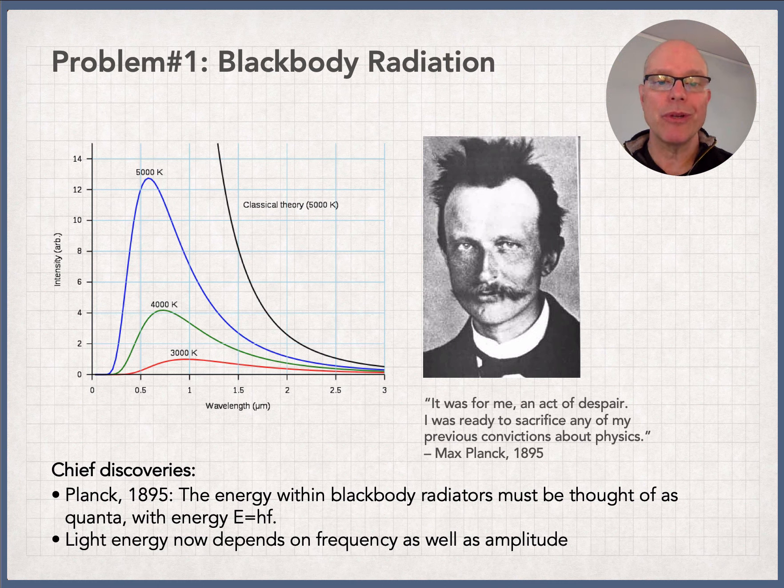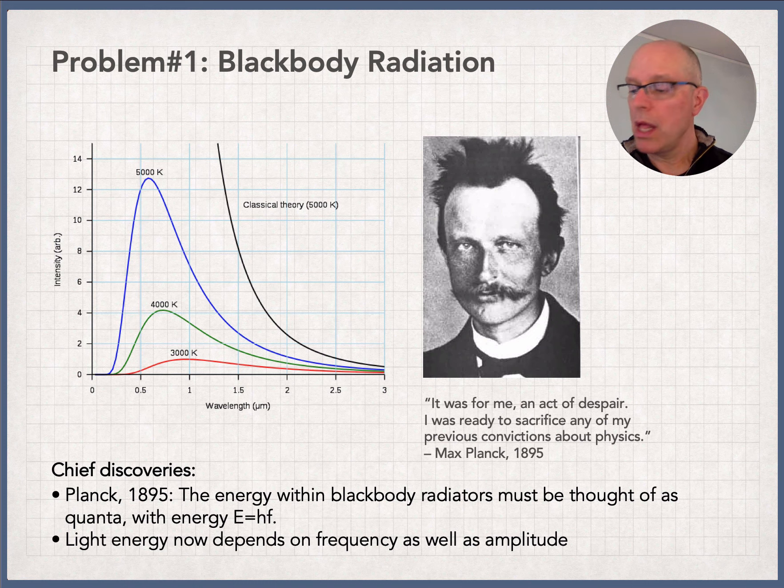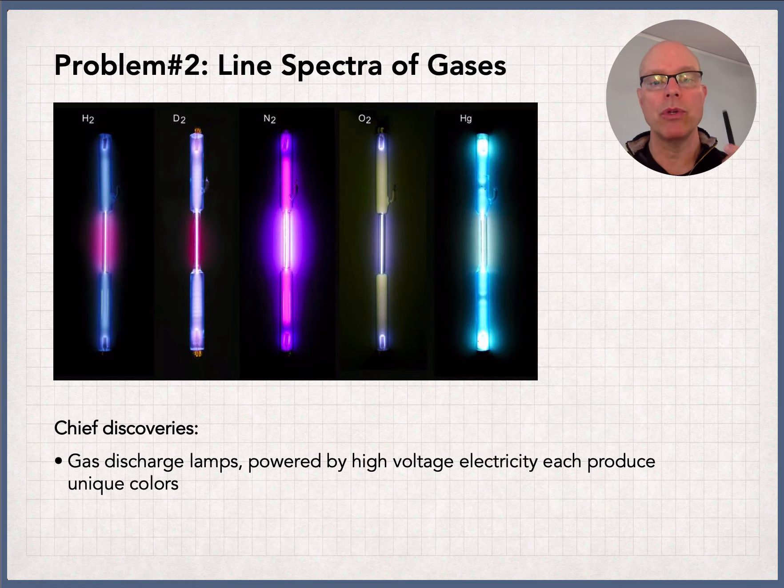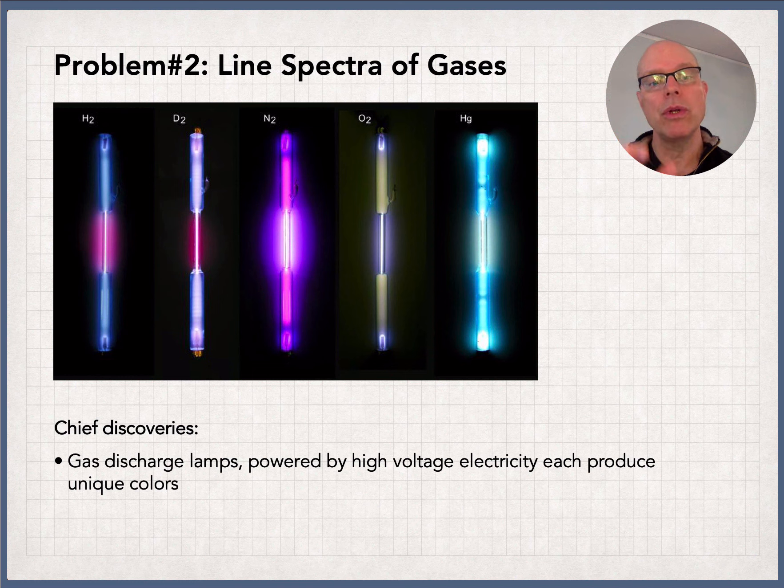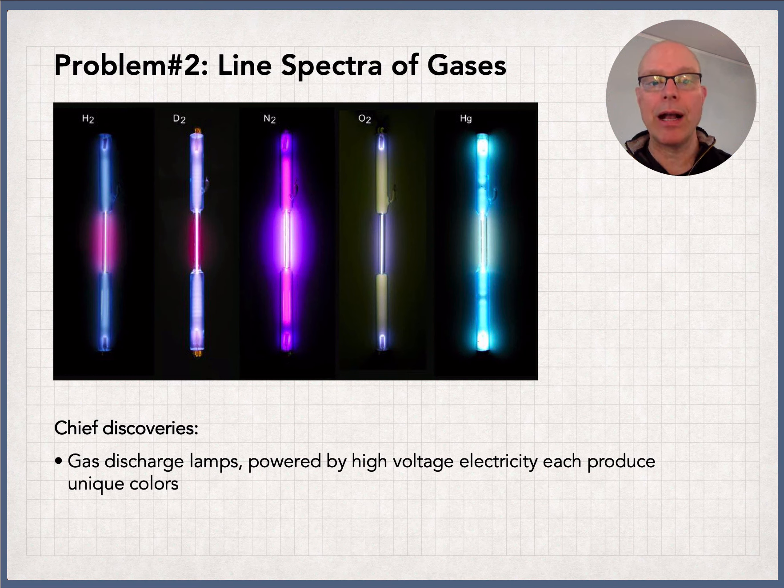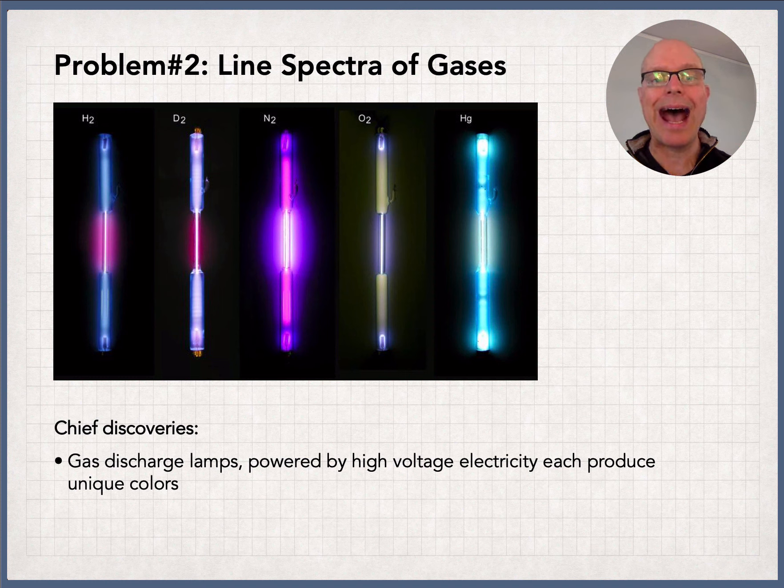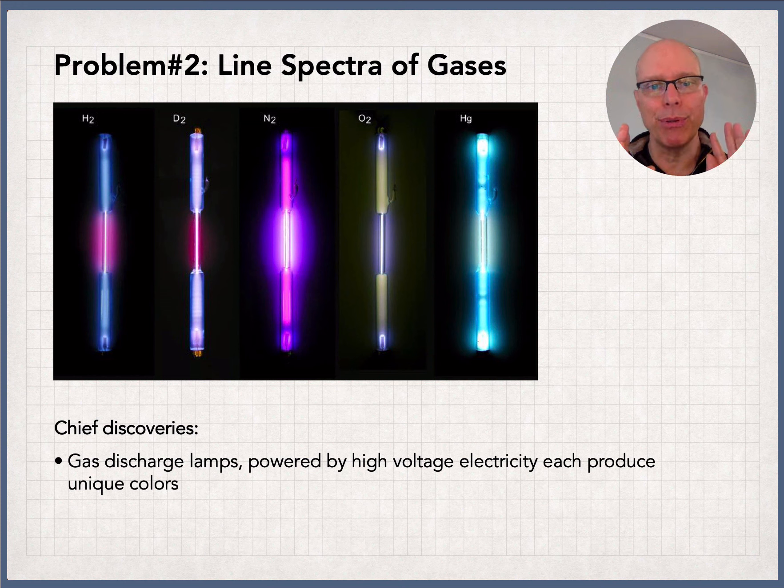The second thing that was known going back to the early 1800s was that if you studied color, you would sometimes see what are called line spectra. Later on in the 1800s, as people developed the technology to make a vacuum tube, suck all the air out of it, then pump it full of a gas, and finally zap it with high voltage, they saw something completely unexpected and unexplainable by the physics of the time.